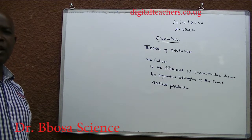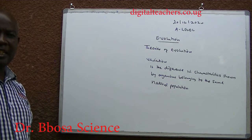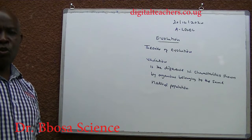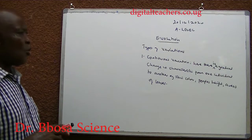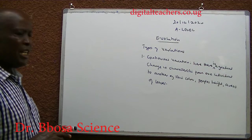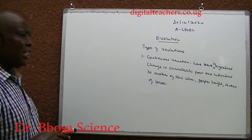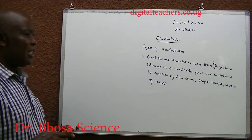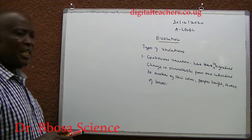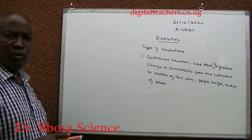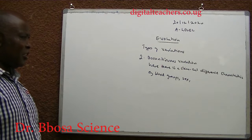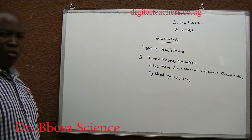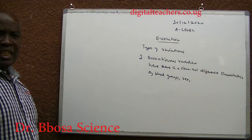Take human beings for example: some are darker, some are lighter, some are bigger, some are shorter, some smaller, some are taller, and so on. Types of variation: one, continuous variation — here there is a gradual change in characteristics from one individual to another, for example skin color, people's height, area of leaves. Two, discontinuous variation — here there is a clear-cut difference between characteristics, for example blood groups and sex, either male or female.